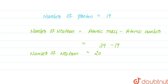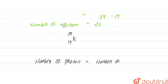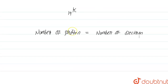Now, for the given element K-39-19, there is no charge on potassium — no positive charge, no negative charge. When an element has no positive or negative charge, the number of electrons equals the number of protons. Therefore, in K-39-19, the number of electrons equals 19. So the number of protons is 19, the number of electrons is 19, and the number of neutrons is 20.